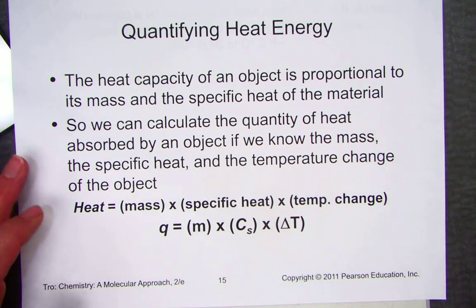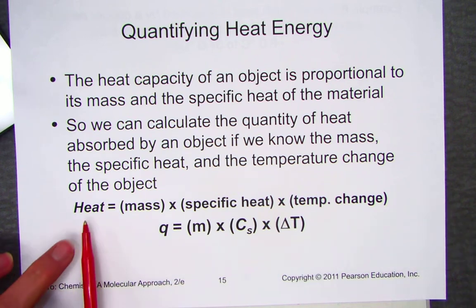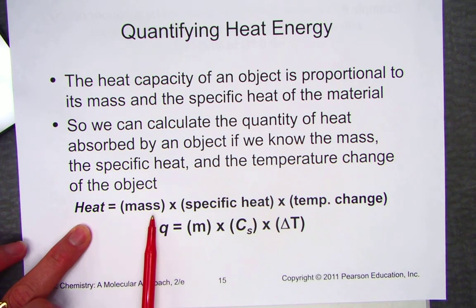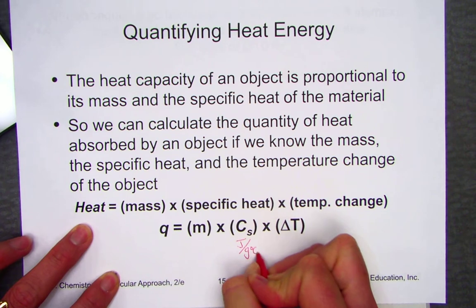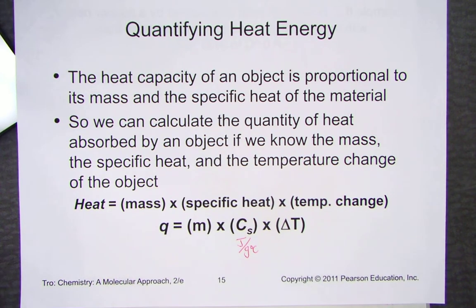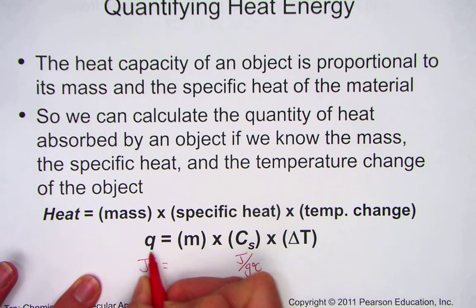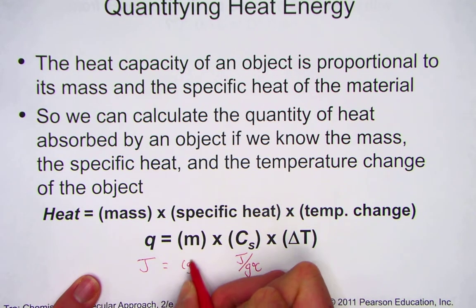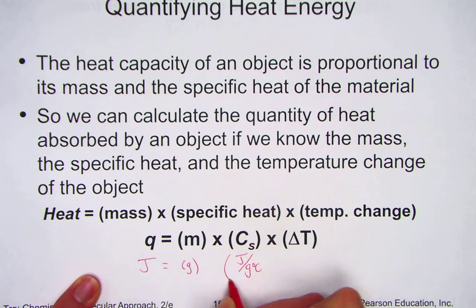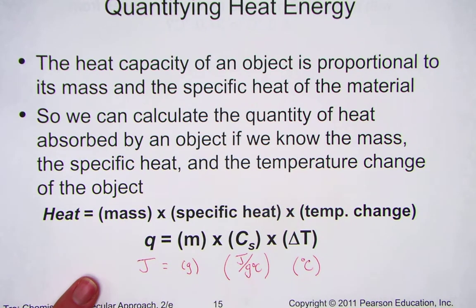Heat capacity of an object is directly proportional to its mass and the specific heat constant for that material. We calculate heat measured in joules, set equal to mass in grams, times specific heat in joules per gram degrees Celsius, times the change in temperature in degrees Celsius. Note that Q represents heat energy, mass is in grams, and specific heat is in joules per gram degree Celsius.